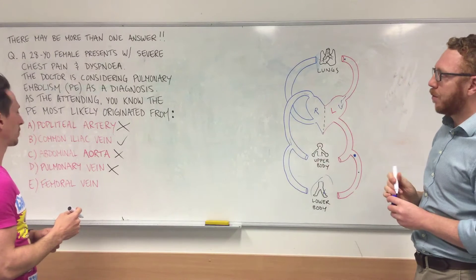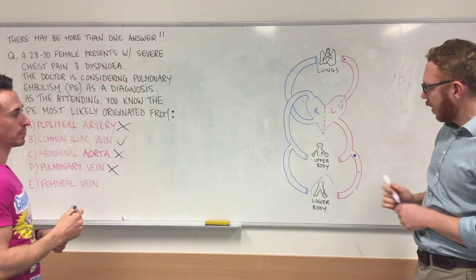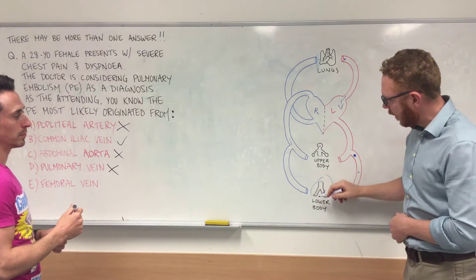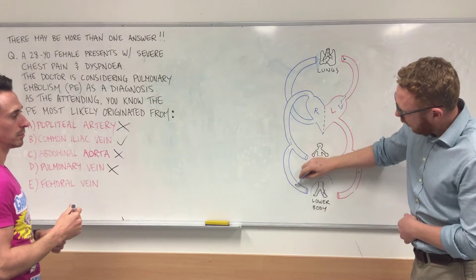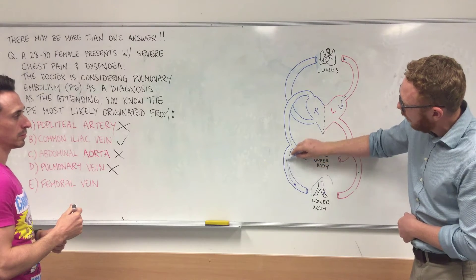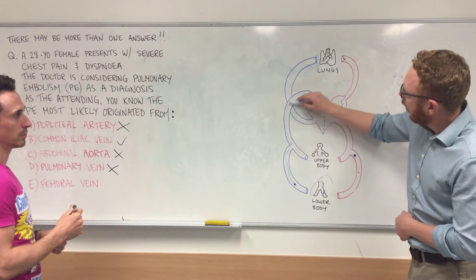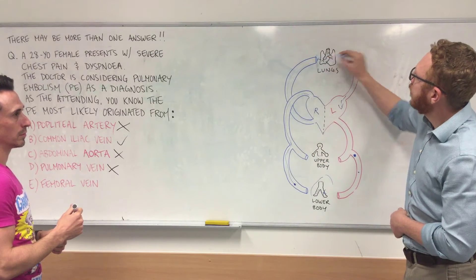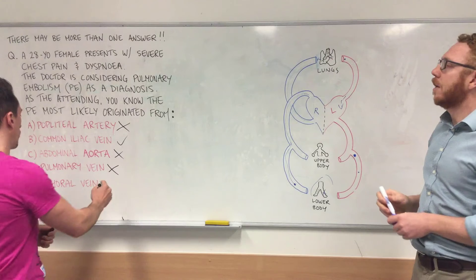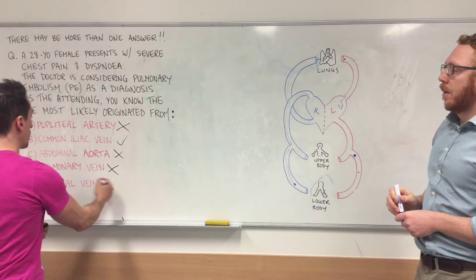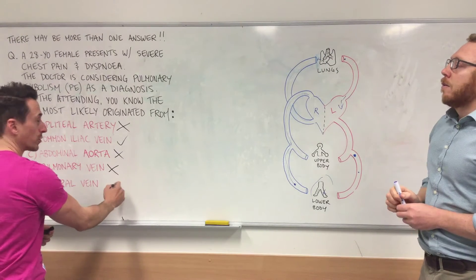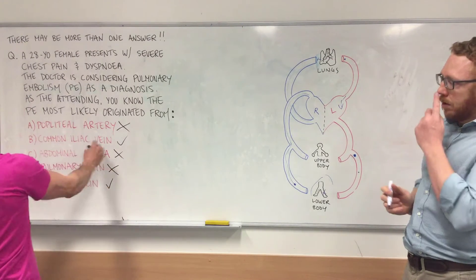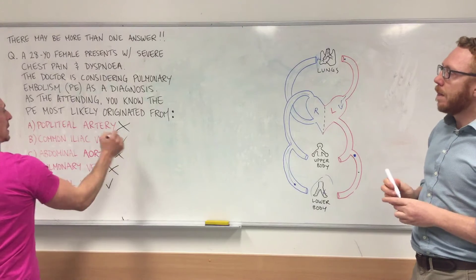Lastly, we have the femoral vein, which is a vein that drains your legs. This could have originated here, and if you follow it up, it could travel all the way back and get stuck in the lungs. So the femoral vein could also be an answer. So we've got common iliac vein and femoral vein as our two correct answers.